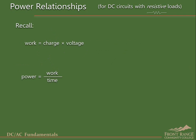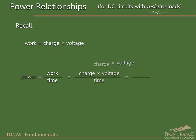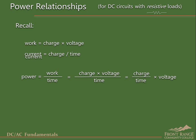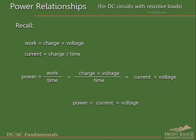Also recall that work is equal to electric charge times voltage. This means that we can substitute the expression charge times voltage for work in the equation for power, which can then be written in this form. Recalling that the definition of electric current is charge divided by time and making this substitution, we see that the power relationship can then be expressed as power equals current times voltage.